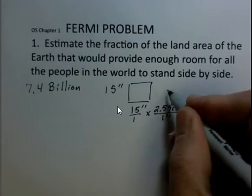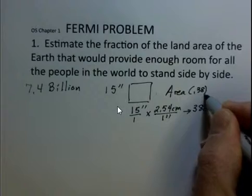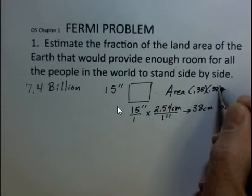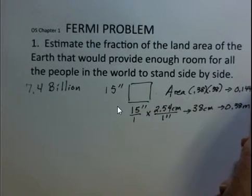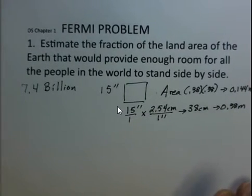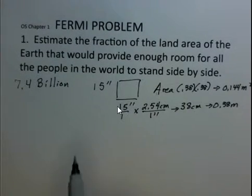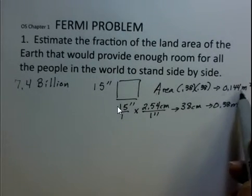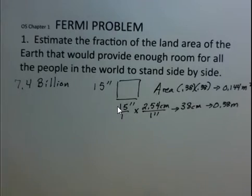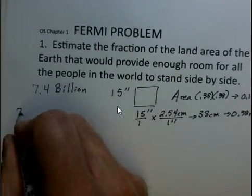And the area, then, would be 0.38 times 0.38, that's 0.144 square meters. That's what one person needs. How would we then come up with the area that 7.4 billion people need? Well, we need to multiply this together. This is for one person, we've got 7.4 billion people, so I'm going to do that calculation up in this free space here.